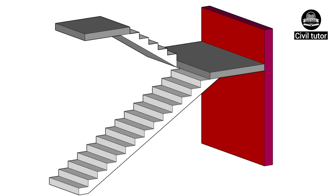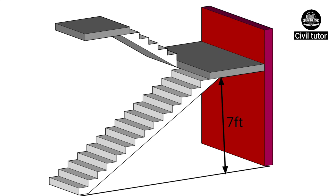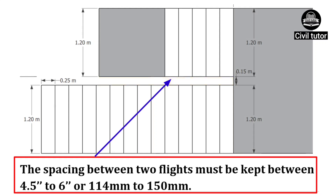It must be noted that the first flight should be kept at a height of 7 feet or more from the ground floor, so that the space beneath it could be utilized for other purposes. The space between two flights must be kept between 4.5 inches to 6 inches or 114 mm to 150 mm.